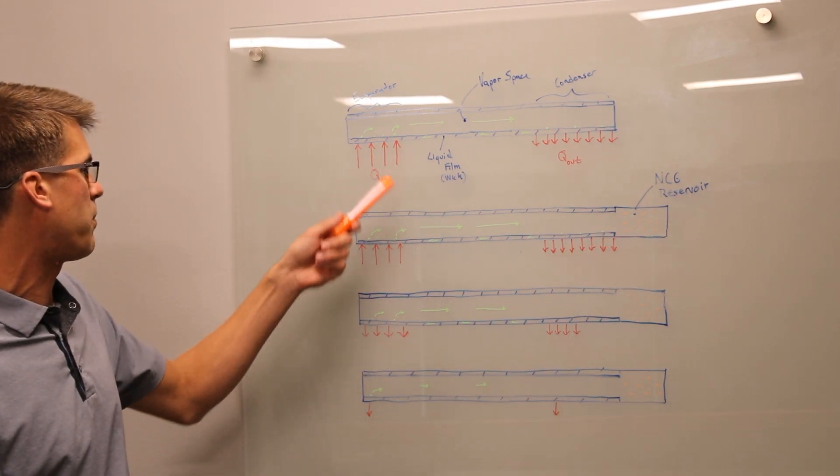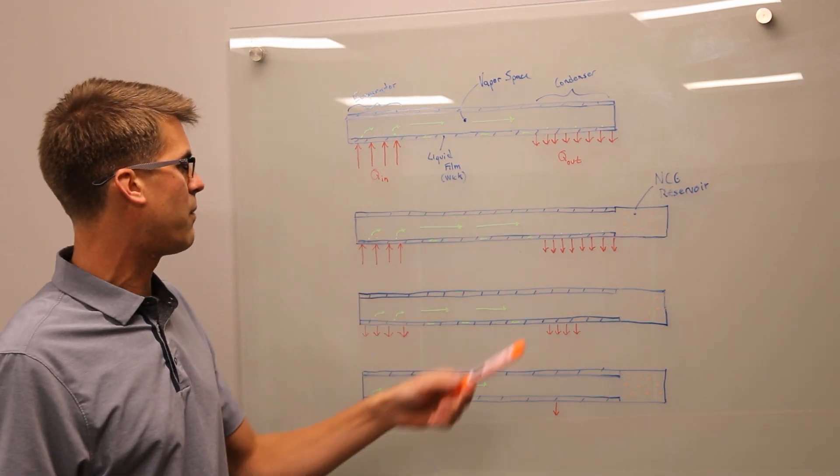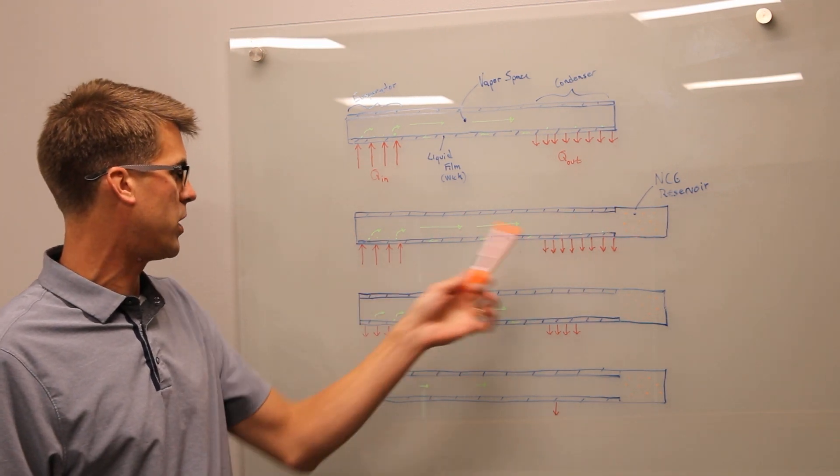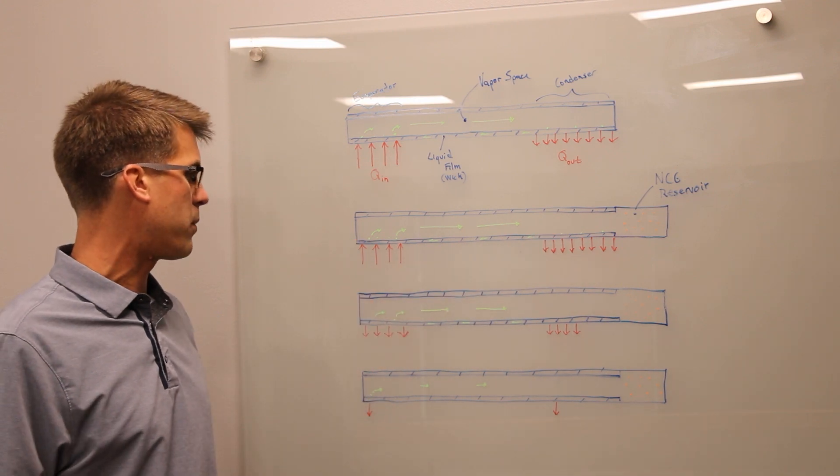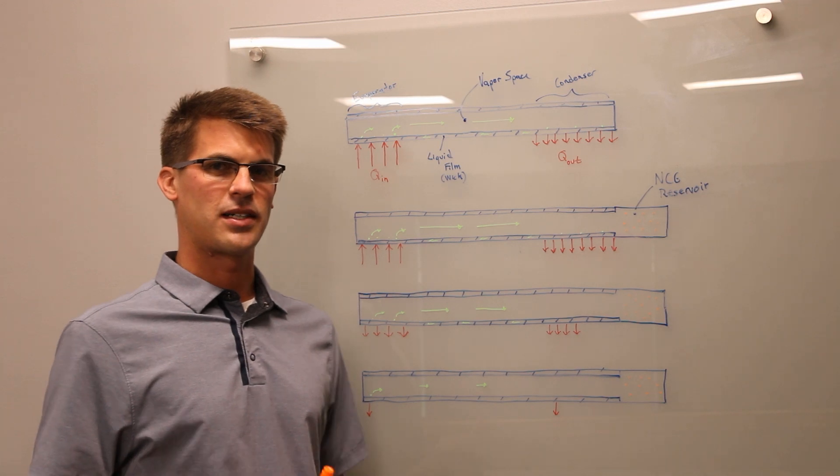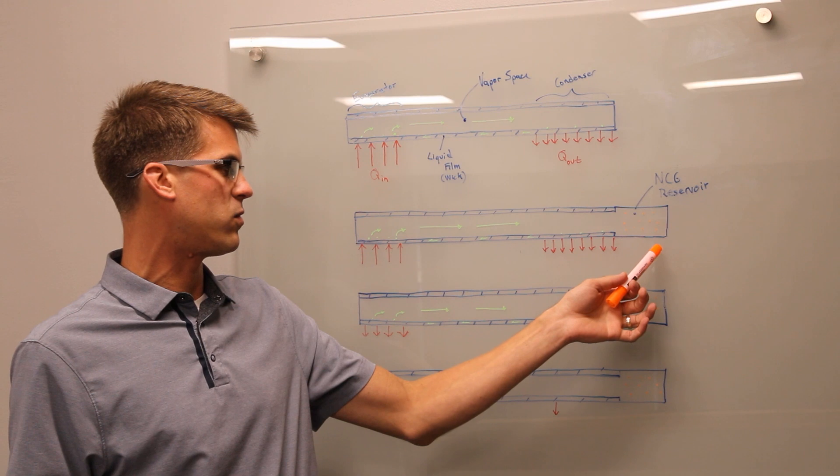Now you can see under normal operating power, this pipe operates the same. It will move the same amount of power. The non-condensable gas will not block any portion of the working fluid vapor space or the condenser or evaporator. The main difference between a CCHP and a variable conductance heat pipe is that in a VCHP, we introduce a non-condensable gas reservoir.